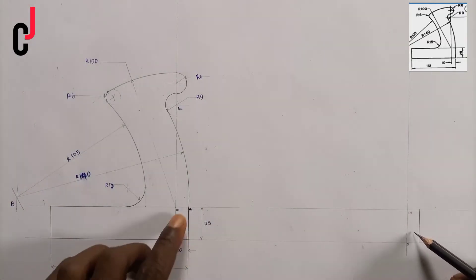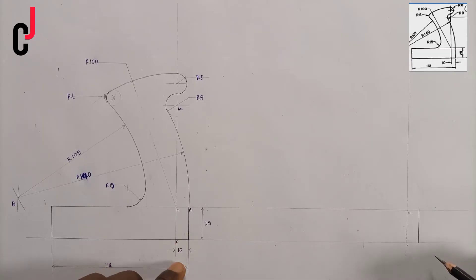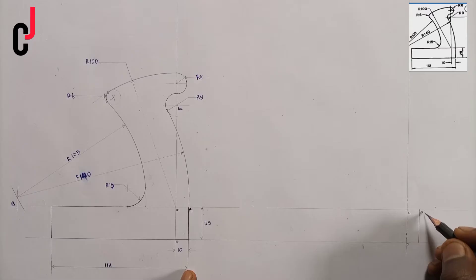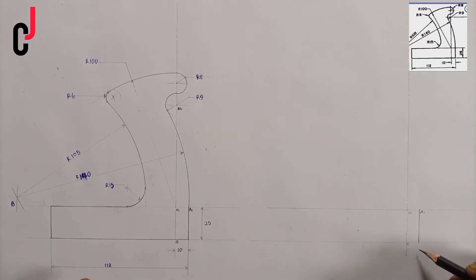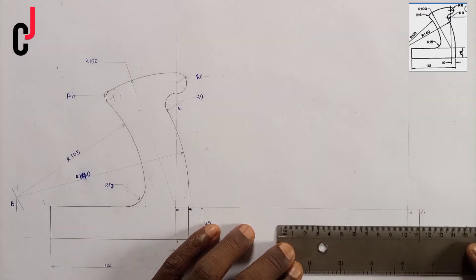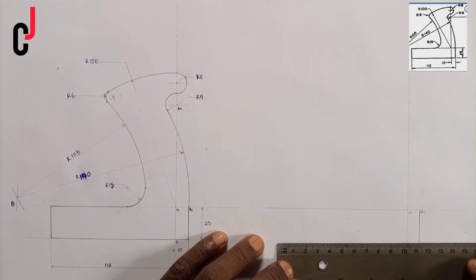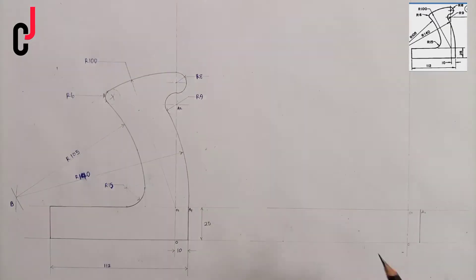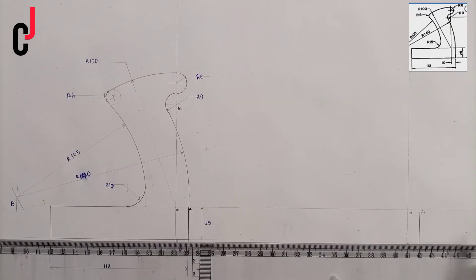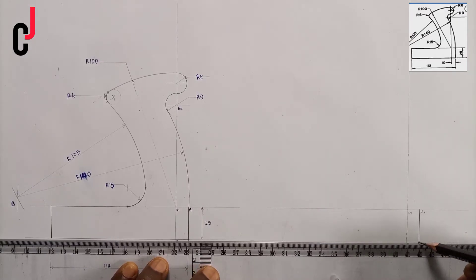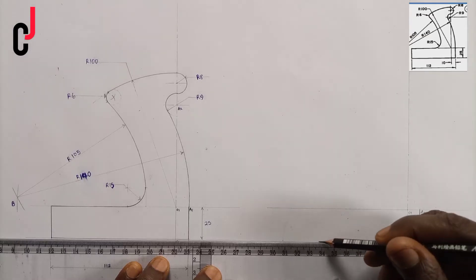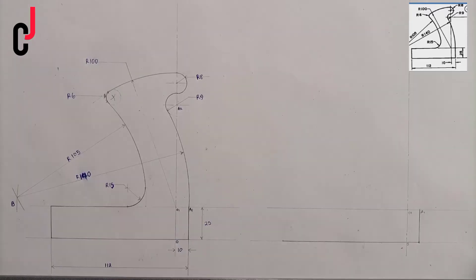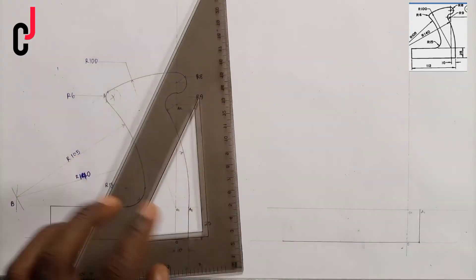This line here is 25 millimeters. From this line, I'll call this point A1. From line A1 to my left is 112 millimeters, so I'll measure 112 millimeters with my rule, put a point there, and outline from A1 to my point. Then I'll project from this point upward.